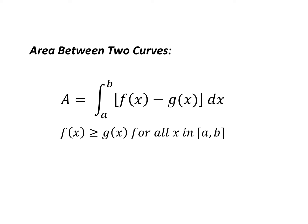In other words, f(x) is on top, g(x) is on the bottom, for all values of x in a to b. So this is basically your definition for the area between two curves. It's the integral of the top function minus the bottom function between the two limits.